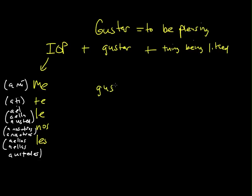either use gusta if the thing being liked is singular, or we can also use it with infinitives. Remember, in Spanish, infinitives end in either -ar, -er, or -ir. The other form is gustan, and the thing being liked in this case is plural. Let's take a look at some examples.